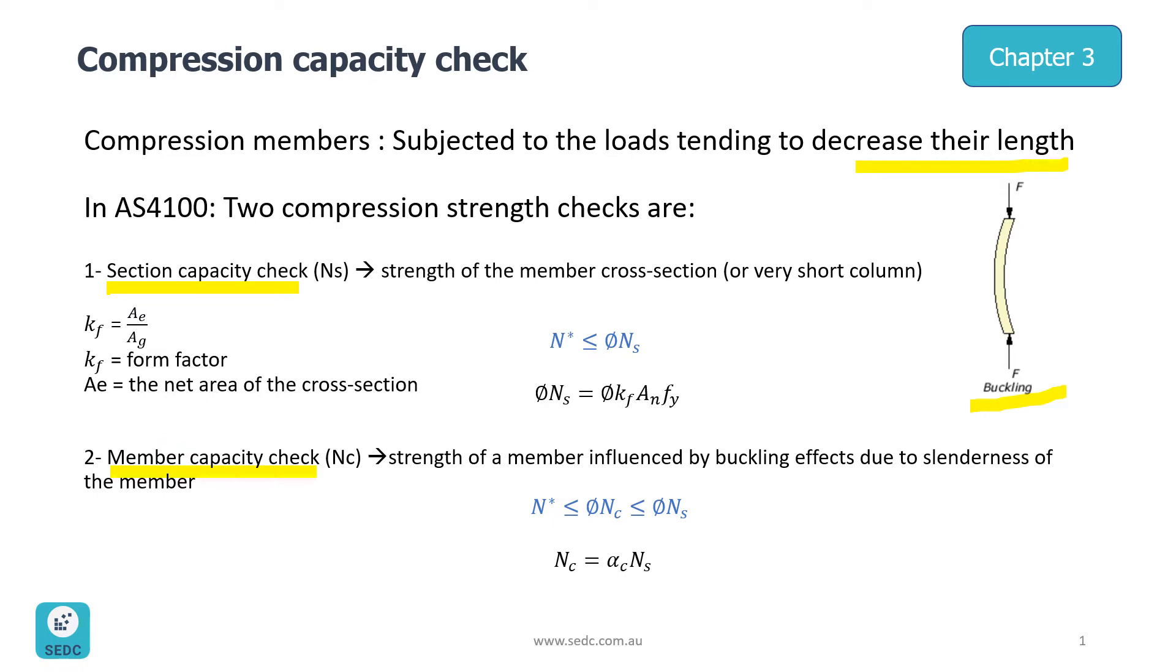Section capacity is defined by NS, which is the strength of the member cross section and is usually the governing formula for very short columns.